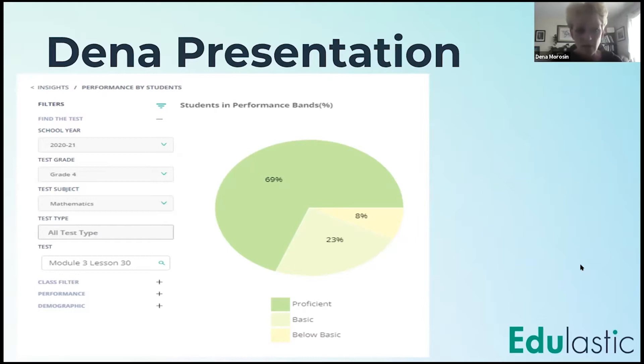And this is one example of one of the performance data graphs that you can look at. And you can see immediately right here who's proficient, who's basic, and who's below. Now, I cut out student names down at the bottom of this graph for privacy. But literally on this graph, if you click on any of those pie pieces there.